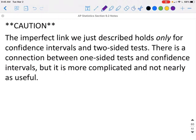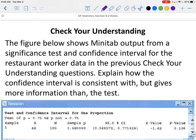The imperfect link we just described holds only for confidence intervals in a two-sided test. There is a connection between one-sided tests and confidence intervals, but it is more complicated and not nearly as useful, so make sure you're only using this for a two-sided test.